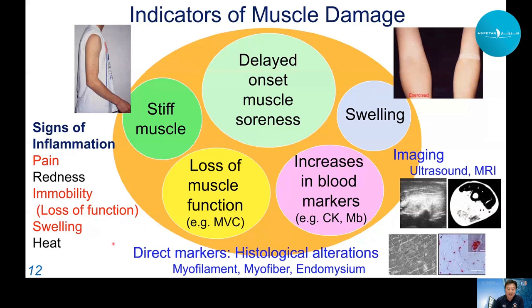Direct markers of muscle damage include histological changes. At the myofilament level, we can see Z-line streaming, damaged fibers infiltrated by mononuclear cells, and damage or inflammation to the endomysium.